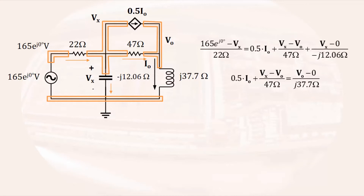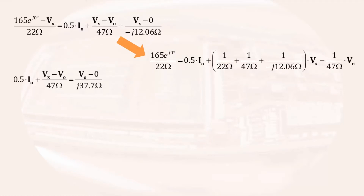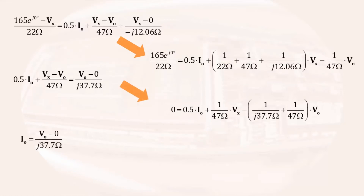The current through the inductor is the only current leaving the right-hand node, written as Vo minus 0 over J 37.7 ohms. Since the circuit has a dependent source, we will have to write the controlling parameter in terms of node voltages, so Io equals Vo minus 0 over J 37.7 ohms. Now we have three equations with three unknowns. Again, I'm going to approach this with the philosophy of doing as little algebra as possible. Rearranging the first equation in order to gather coefficients gives us the following equation. Rearranging the second equation results in this, and rearranging the last equation results in this. These equations can easily be written in matrix form.